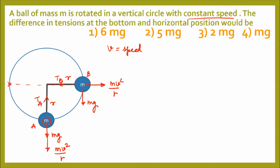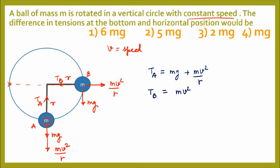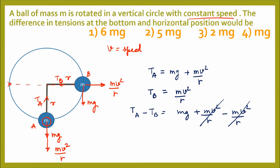Here r is the radius of the vertical circle. Now we write expressions for T_A and T_B. T_A balances both mg and mv²/r, so T_A = mg + mv²/r. T_B only balances the centrifugal force, so T_B = mv²/r. The difference T_A − T_B = (mg + mv²/r) − mv²/r — the mv²/r terms cancel.